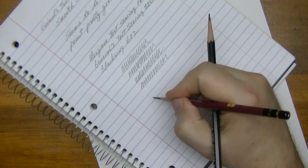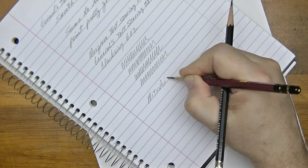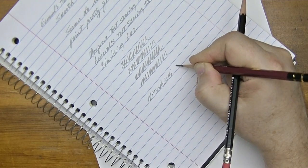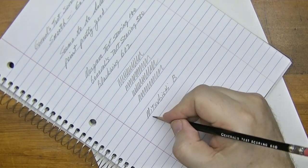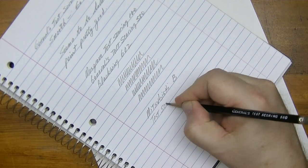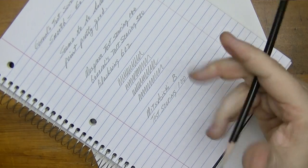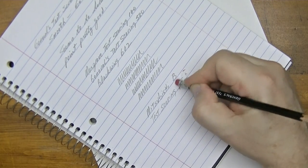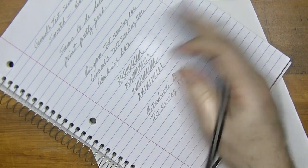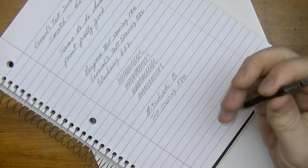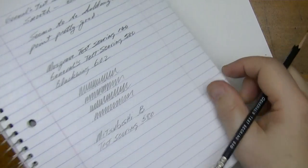Here we have the Mitsubishi B pencil and then we have of course the test scoring 580. And by the way as you can see the eraser works fine. Alright. So there you go those two are pretty comparable.